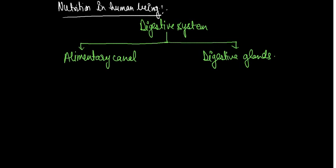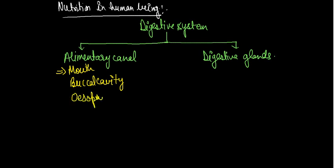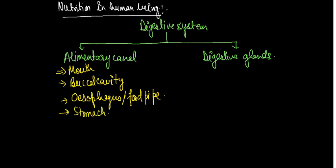The alimentary canal starts from the mouth, then the buccal cavity, after that it goes into the oesophagus. The oesophagus is also called the food pipe.